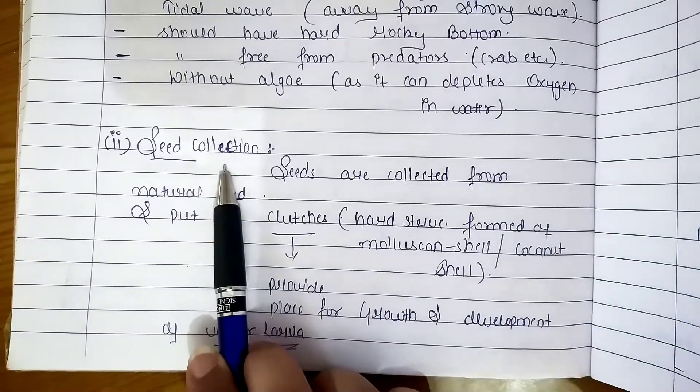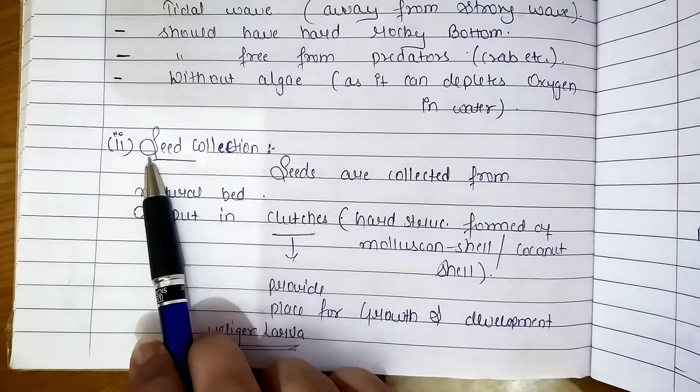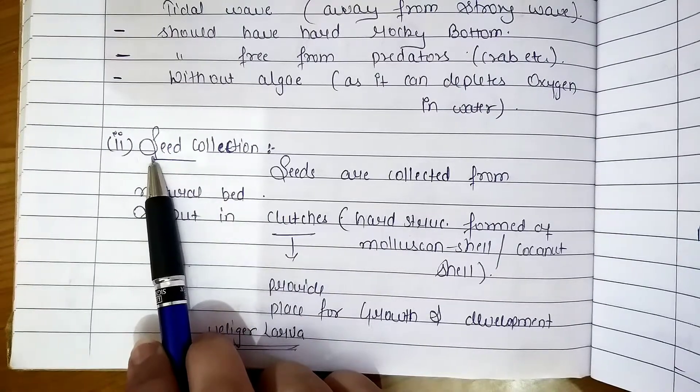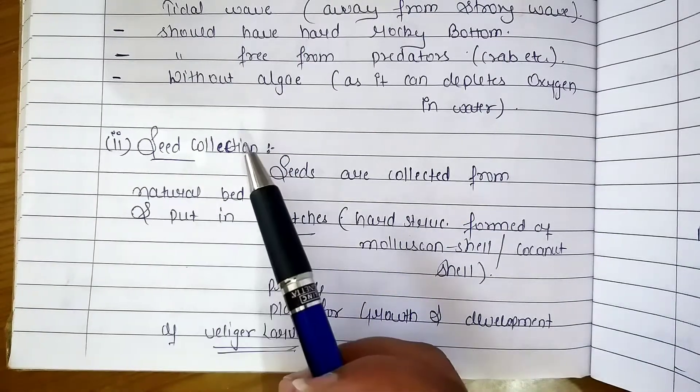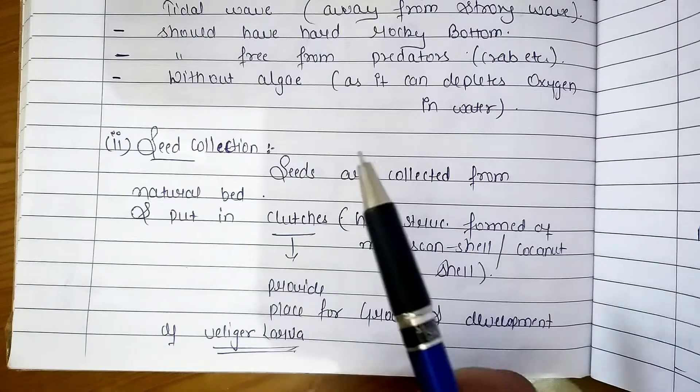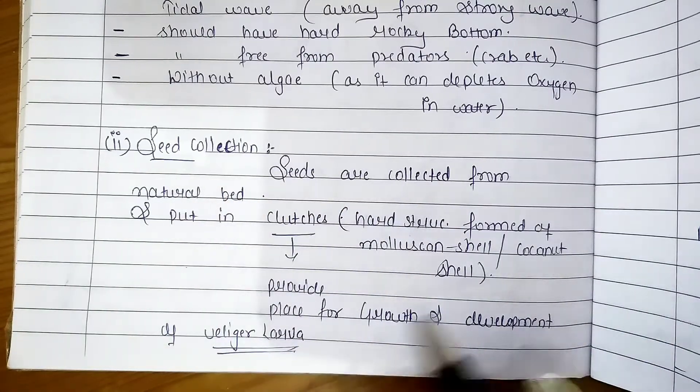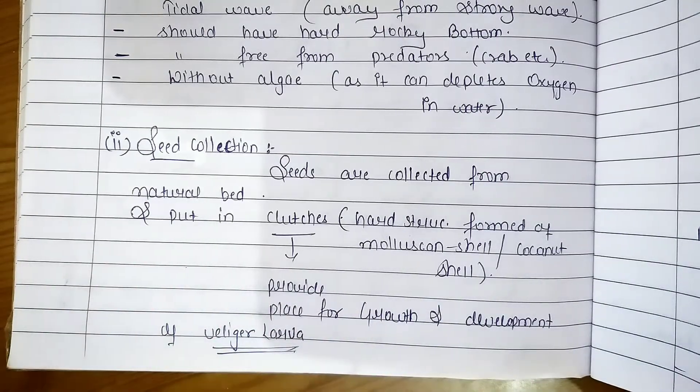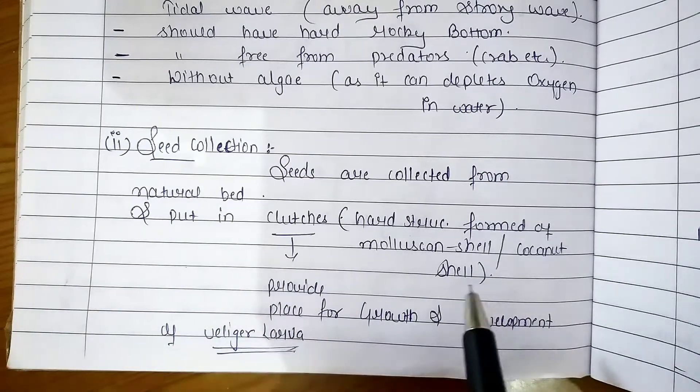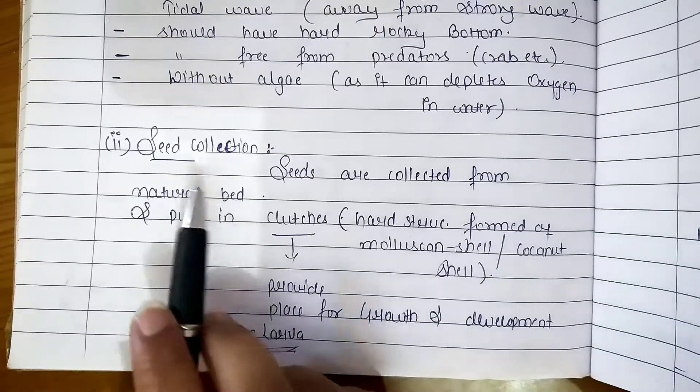First of all, we have seed selection. We are often confused about seed. Seed refers to fish's younger ones. They are very small fertilized seeds, very young ones, which is called fish seed.